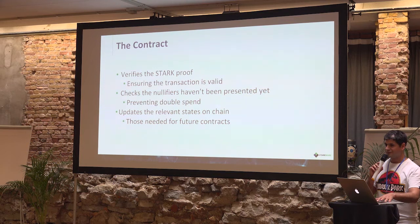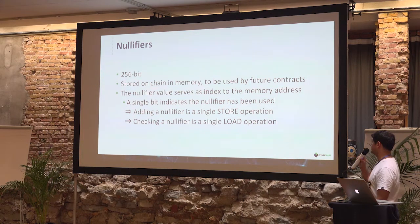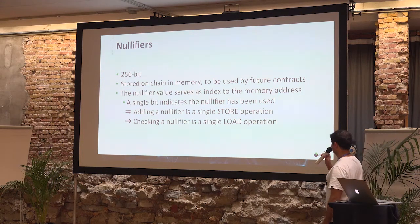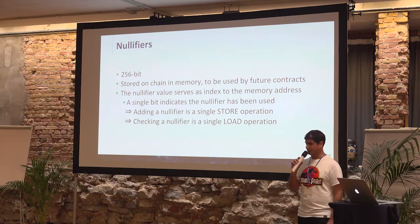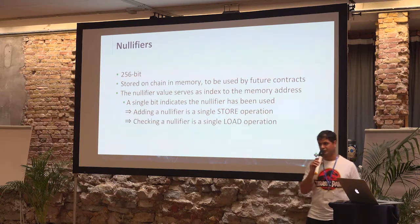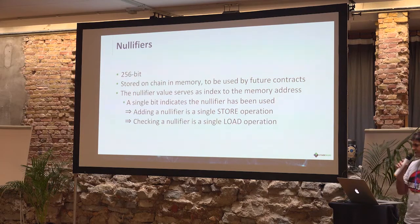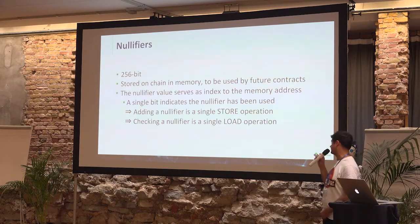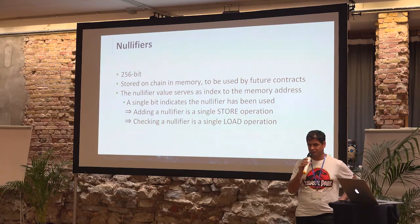How does it look technically? Nullifiers are 256-bit. The way we chose to implement it is that they are stored on-chain in memory, and future contract calls can check whether a given nullifier has been presented before or not. You store the nullifier using a single store operation, and to check that the nullifier does not exist is another load operation.